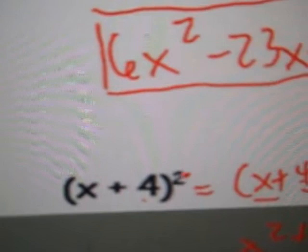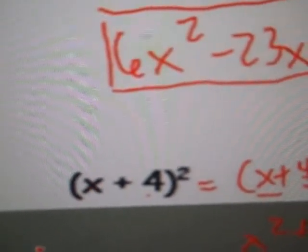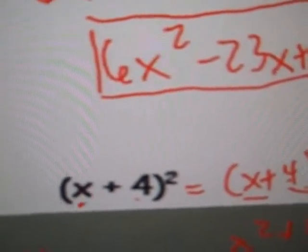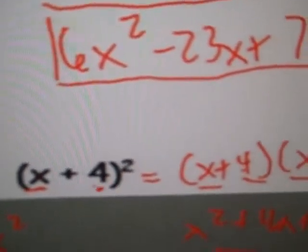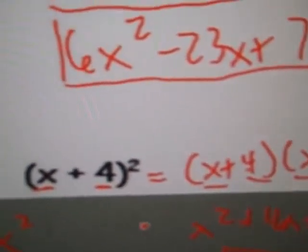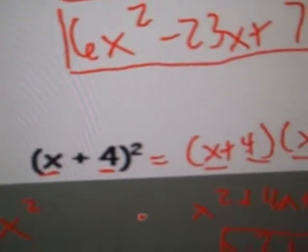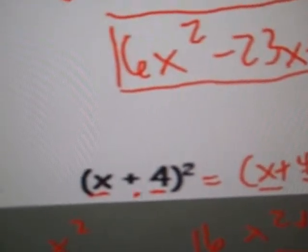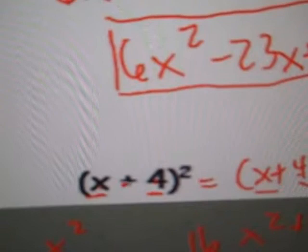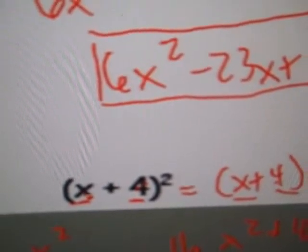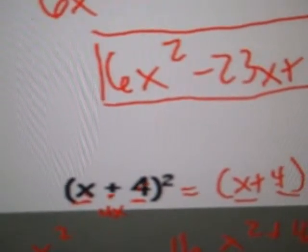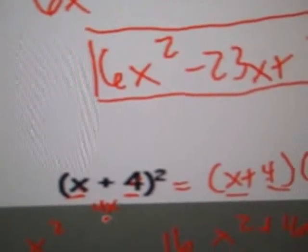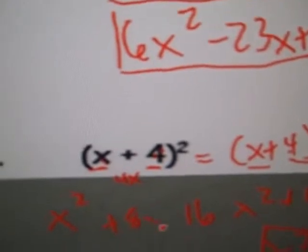One thing you can do with these types of problems when you're taking one term and you're squaring it. Just go ahead and square the first term, that is x. x squared. And then square the second term, 4. 4 times 4 is 16. And what you do next is multiply the two terms here, 4 times x, and you get 4x. But that's not it. You just double it afterwards. 2 times 4x is 8x.